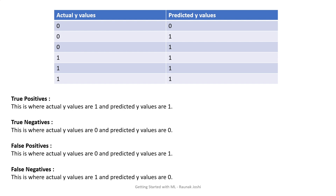The confusion matrix consists of four important concepts: true positives, true negatives, false positives, and false negatives. True positive is where you have the value 1 in your actual Y and your predicted value is also 1. So this is true positive.